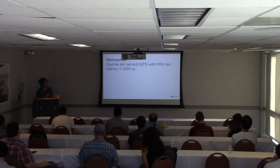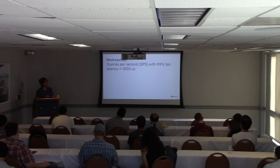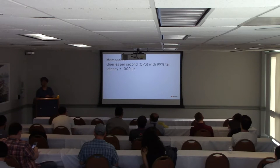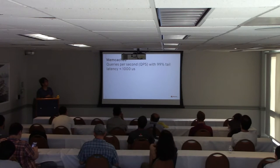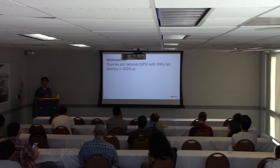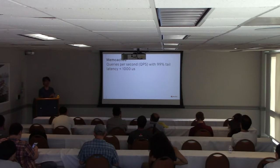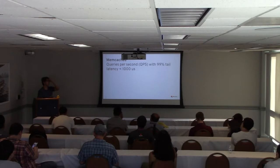Another more realistic workload we ran is memcached — an in-memory key-value store commonly run under an SLA, for example 99th-percentile latency under 1,000 microseconds. Our goal: can you maximize queries per second by tuning interrupt delay while maintaining this SLA? This seems counterintuitive — for a latency-sensitive workload, shouldn't you just poll all the time and never delay interrupts, since you want to handle them immediately?